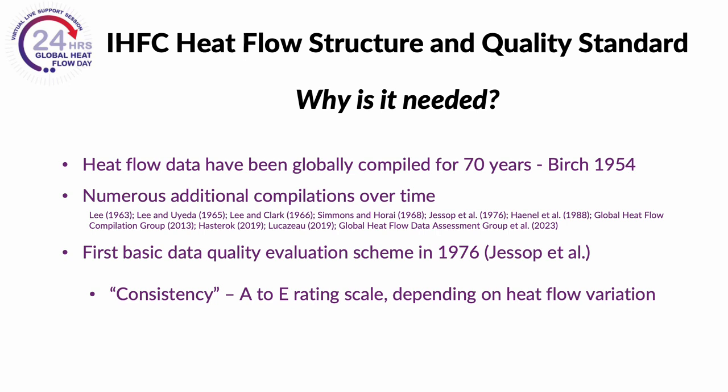A rating of A was defined as having heat flow variation of less than 10%, while B had a variation of 10 to 20%, and C had over 20% variation. A rating of D indicated that the probe tilt was not determined, and E meant that the variation was indeterminable. Although this quality scheme provided some information on the accuracy of the heat flow value itself, it did not provide detailed information on the reliability of the final values, nor did it give information on the applied technologies.